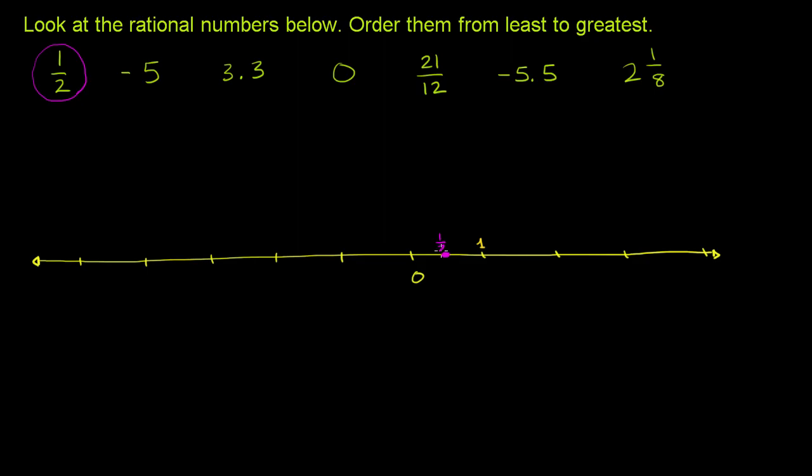So that is, let me write that a little bit bigger. You probably have trouble reading that. I'll write 1 over 2, which is also 0.5. So this is also 0.5. Anyway, that's where it sits.